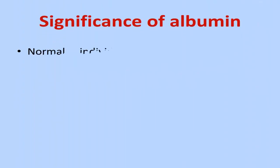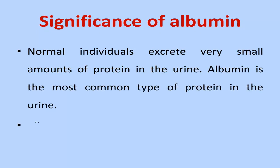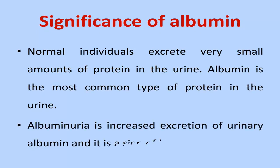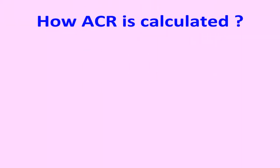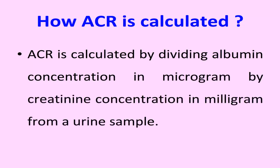Albumin to creatinine ratio (ACR): normal individuals excrete very small amounts of protein in the urine; albumin is the most common type of protein in the urine. Albuminuria is increased excretion of urinary albumin and is a sign of kidney damage. ACR is calculated by dividing albumin concentration in micrograms by creatinine concentration in milligrams from a urine sample.